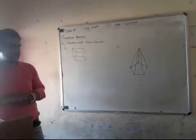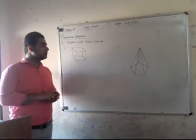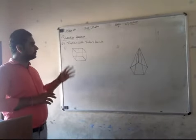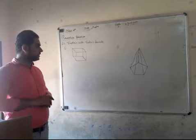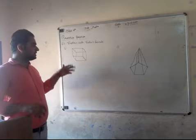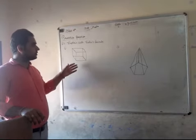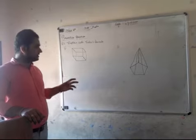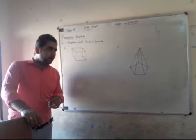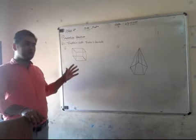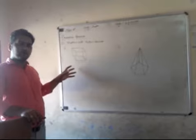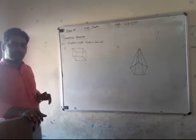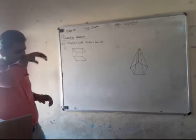This is the first question. Question number one: explain and identify the number of faces, edges, and vertices for the given diagram. First of all, look at the shape and tell the numbers.